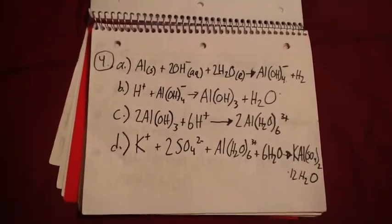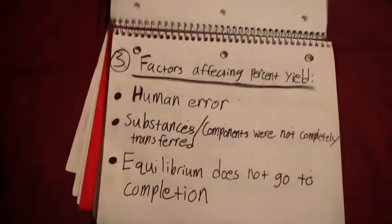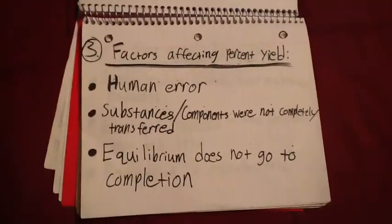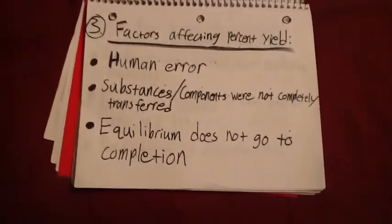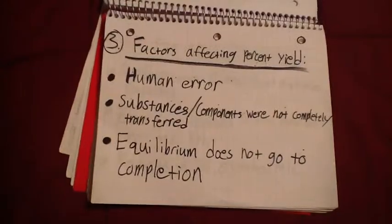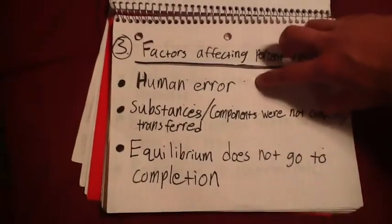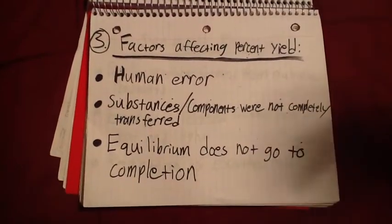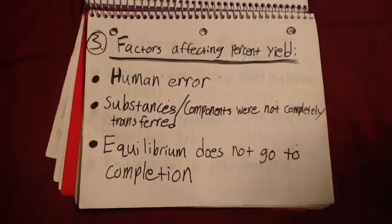Question three, the factors affecting percent yield. Obviously we didn't get 100%, so what's holding us back? We have human error as probably the main cause, as far as weighing and maybe writing down a number wrong here or there.